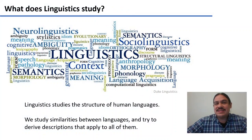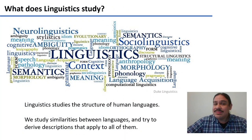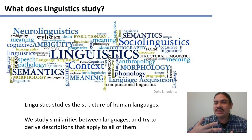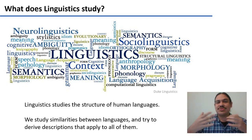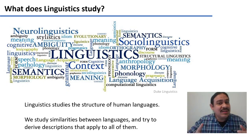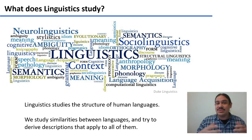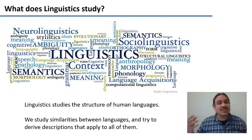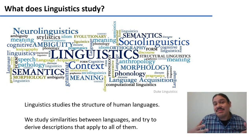For the most part, linguists study the structure of human languages. We try to describe languages, to find patterns to how the words relate to one another, the sounds relate to one another. From this, we try to extrapolate general structure — hopefully structure that will apply not just to the language we're studying, but to many languages, or even all human languages. We try to find universals across them, so that we can ultimately develop scientific theories about the phenomenon of human language.